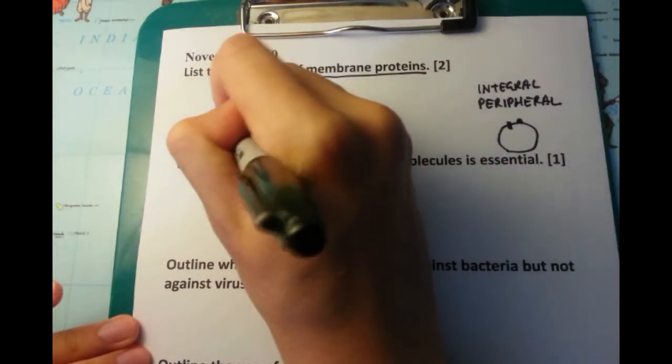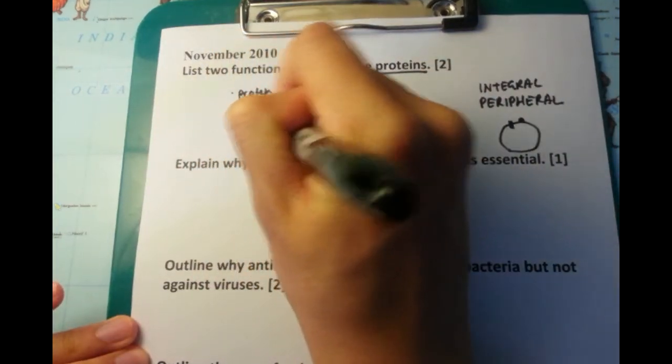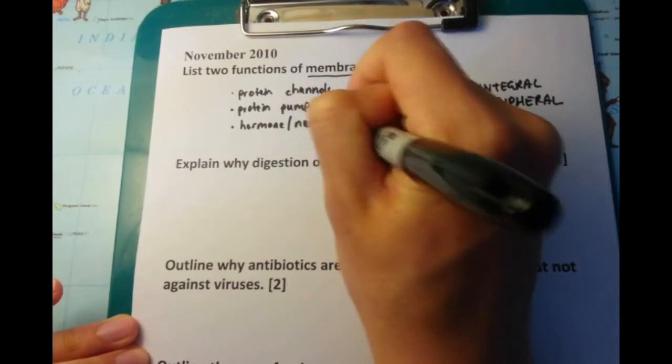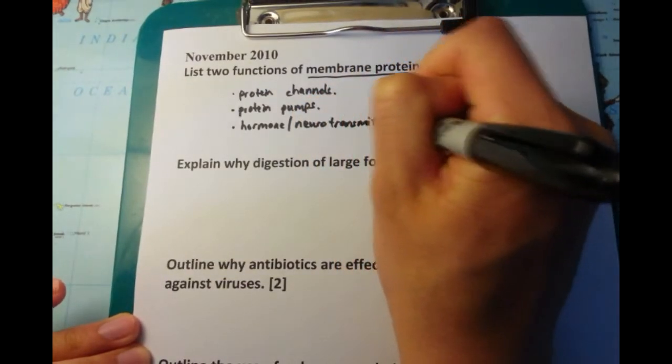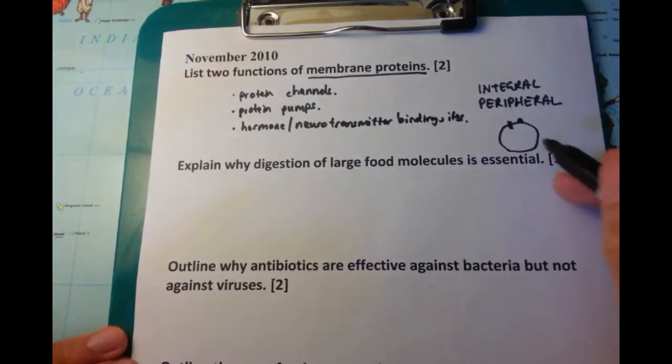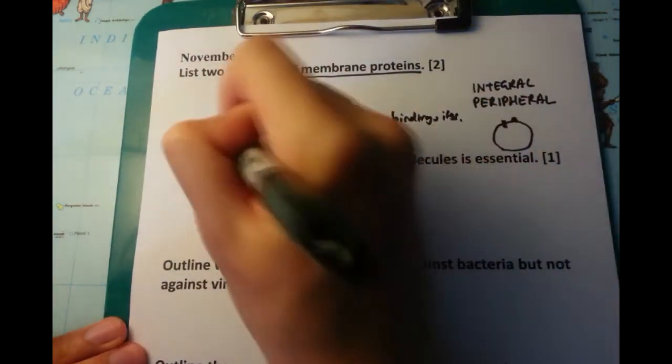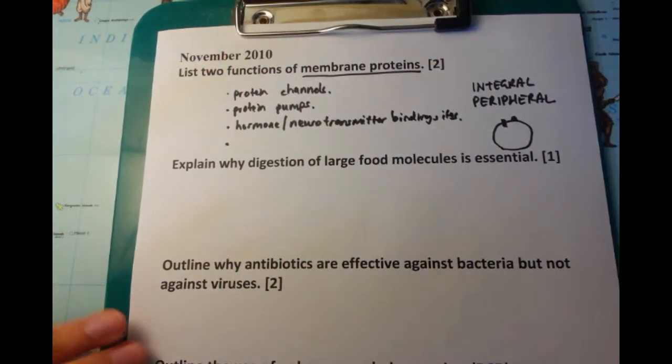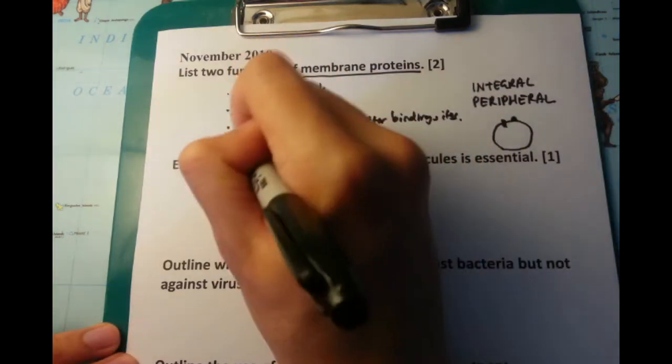Now for peripheral proteins, you want to talk about things which are a bit different. So the one that jumps to mind for me is a neurotransmitter binding site, say when you have an action potential being transferred across the synaptic gap. The acetylcholine binding sites are an example of that.